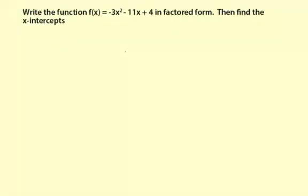Write the function f(x) = -3x² - 11x + 4 in factored form. Then find the x-intercepts.